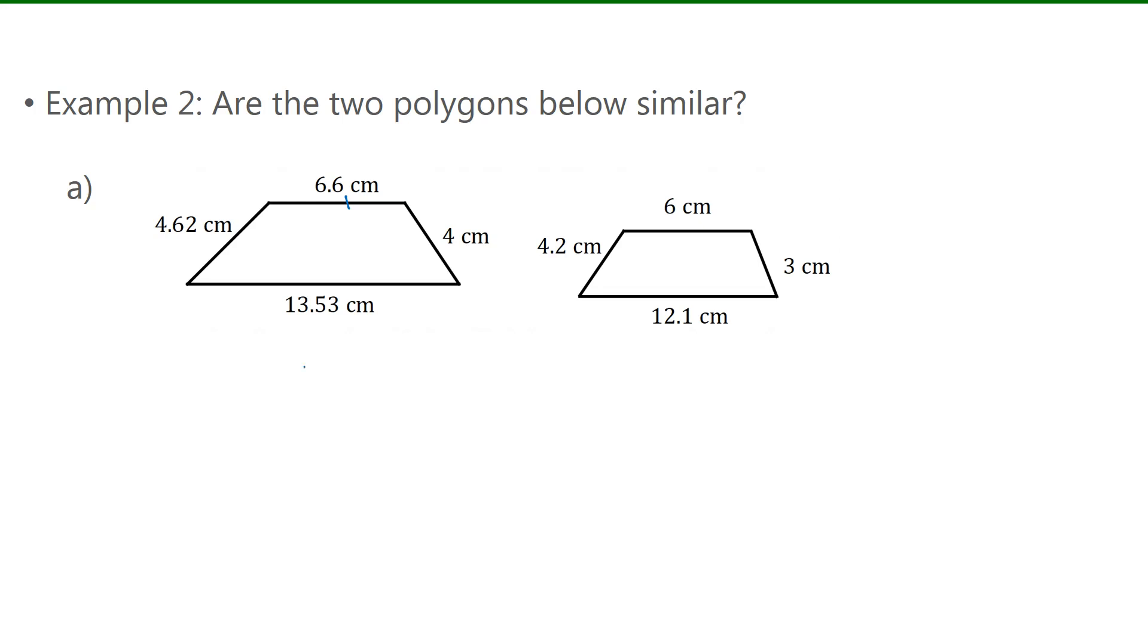So I'm going to take this side length here, 6.6 centimeters, and divide that by 6 centimeters. That should be equal to 4 centimeters divided by 3 centimeters. That should also be equal to 13.53 centimeters divided by 12.1 centimeters. And the last two sides, 4.62 divided by 4.2. So if these two polygons are similar, then all of these fractions should work out to be the same number.